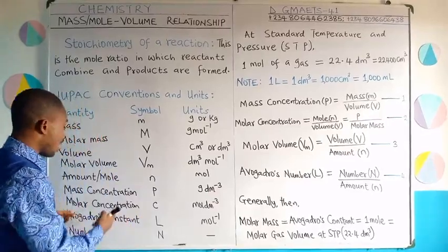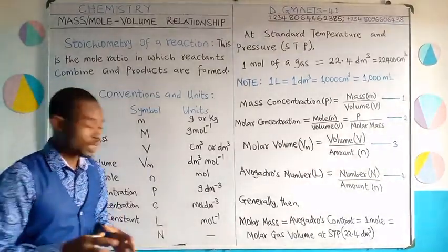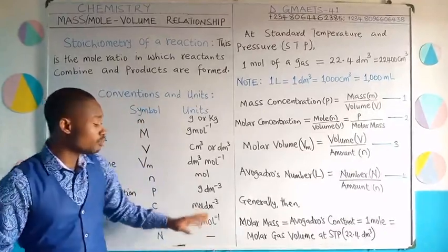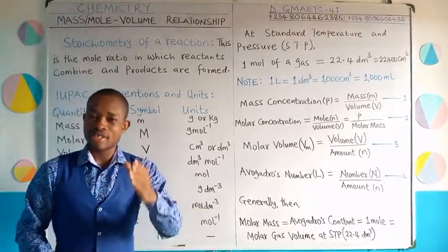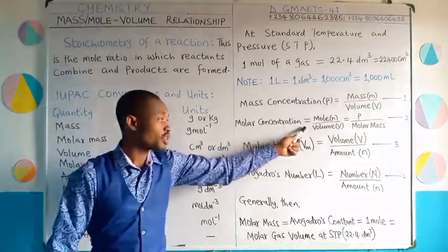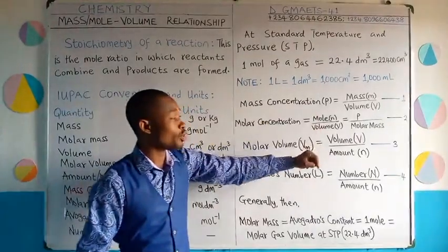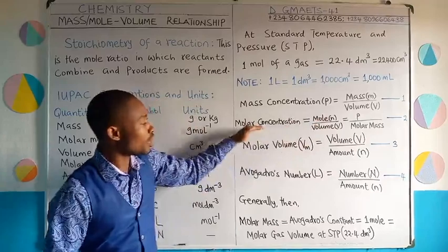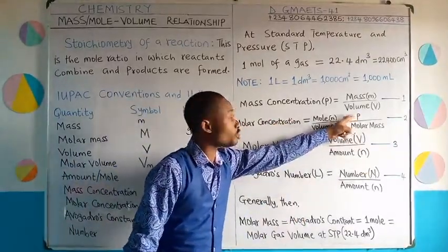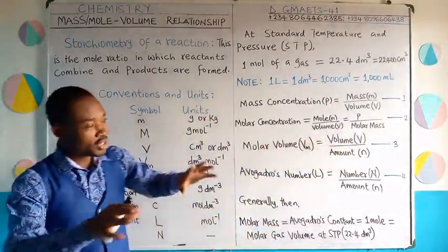Then we talk about molar concentration. We use the symbol C for it, and molar concentration has the unit mol per dm³. So the formula is: number of moles divided by volume. Apart from moles divided by volume, molar concentration can also be expressed as mass concentration ρ divided by molar mass.